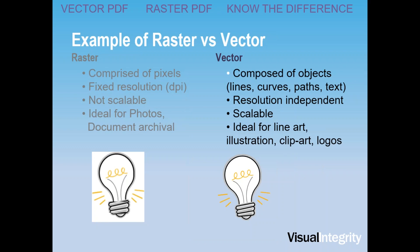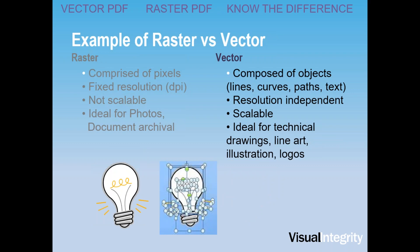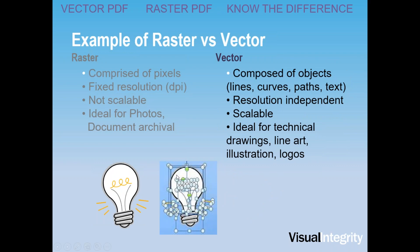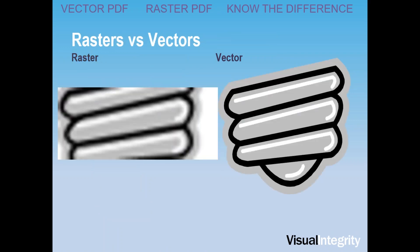A vector is composed of objects, lines, curves, paths, and text. It's scalable and resolution independent, which means when you zoom it, it will enlarge perfectly — you won't see that jaggedness. It's made up of many different objects, and you can see that through the grouping — all the individual objects that make up the shape. When both are zoomed, you can see the difference: the vector can scale to any size, large or small, and it looks great. Whereas the raster, once enlarged, loses much of its definition and becomes grainy or noisy looking.